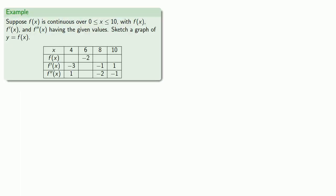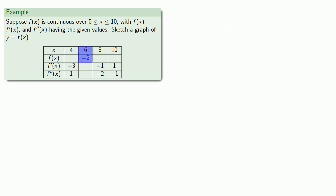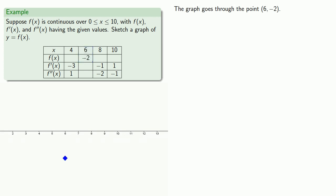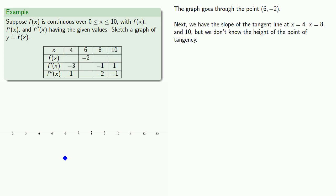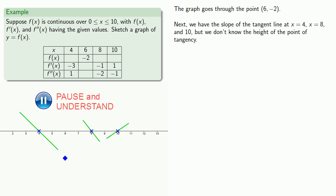For example, suppose we have the following information. It's convenient to start with an actual point on the graph — we know the graph goes through a given point. We also know the slope of the tangent line at x equals 4, x equals 8, and x equals 10, but we don't know the height at each point of tangency. So we place placeholder points and draw tangent lines with the appropriate slopes, knowing we'll need to adjust heights later. We want to incorporate the second derivative information rather than ignoring it.